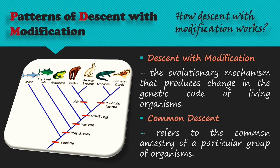Descent with modification is simply passing on the genetic code from parent to offspring with changes that are in turn hereditary. The three mechanisms that can change the genetic code of a population are mutation, migration, and genetic drift. In each case, the offspring in the population will have slightly different genes than the parent and, as a result, will have different characteristics.